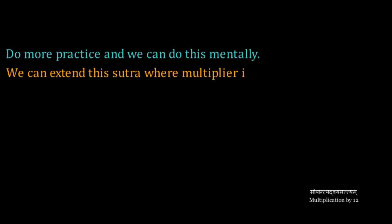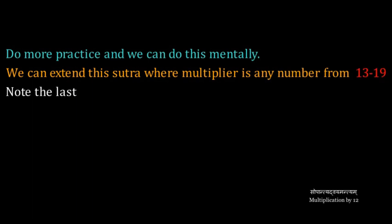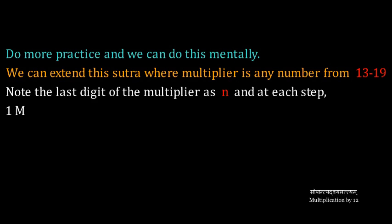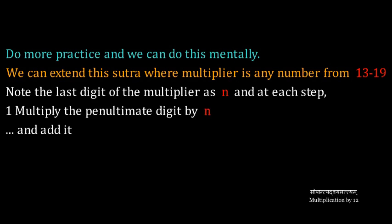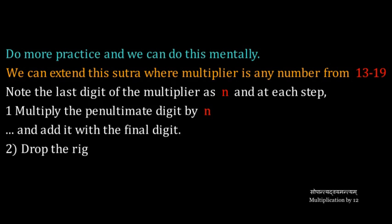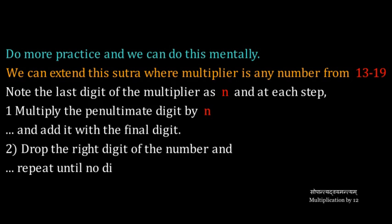With more practice, we can do this mentally. We can also extend this sutra where the multiplier is any number from 13 to 19. We take the last digit of the multiplier as n, and at each step, multiply the penultimate digit of the number by n and add it with the final digit. Then we drop the right digit of the number and the same process is repeated.